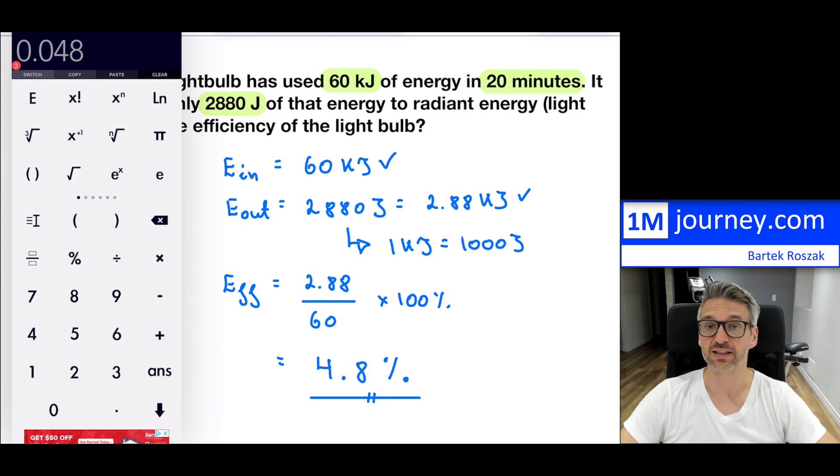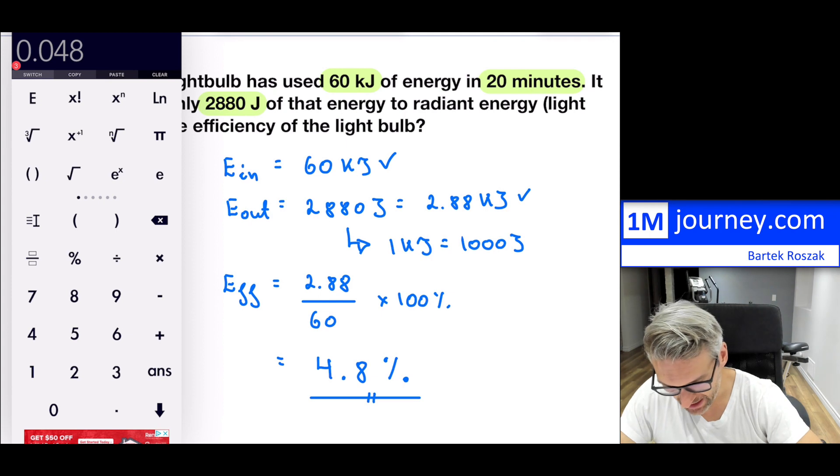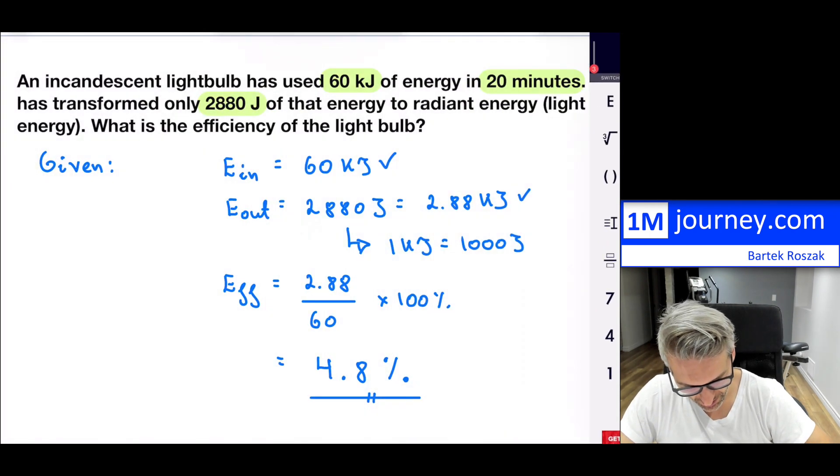So this isn't very difficult for us to do. Now, so for this, if I take up my calculator here, so I'm going to get 2.88 divided by 60, and that is 0.048, and if you multiply by 100, so that is approximately 4.8% of efficiency. So not very efficient at all. So we're using approximately 5%, and that actually is typical.